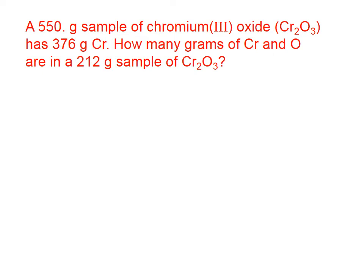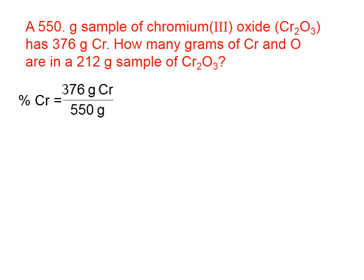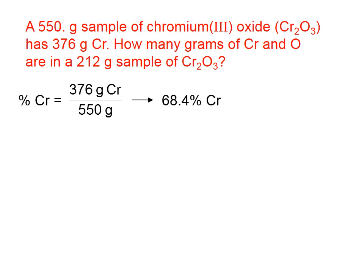Let's do one more. A 550 gram sample of chromium 3 oxide — formula Cr2O3 — has 376 grams of chromium. How many grams of chromium and oxygen are in a 212 gram sample? First, let's calculate the percentage of chromium: 376 divided by 550 gives us 68.4%. Since there are only two types of atoms — chromium and oxygen — oxygen must be 31.6%, because the sum must be 100%.